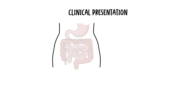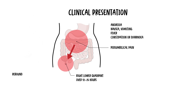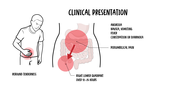The classic symptoms of appendicitis begin with vague peri-umbilical pain that then localizes to the right lower quadrant over 12-24 hours. This may be accompanied by anorexia (reduced appetite), nausea, vomiting, fever, and constipation or diarrhea. Examination may reveal rebound tenderness, guarding, and localized peritonism.